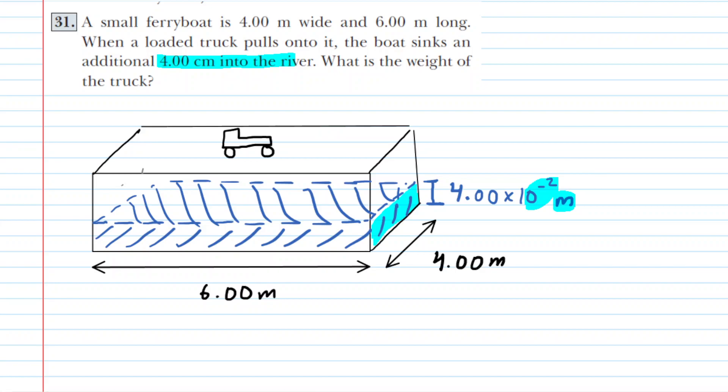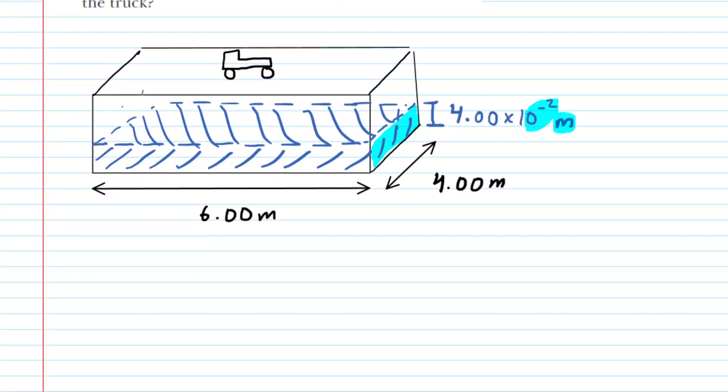Next we're going to draw a free body diagram showing the forces acting on the ferry boat. We'll represent the ferry boat as just a dot. We have the weight of the truck bearing down on the ferry boat, so we'll call that W sub T. And then the ferry boat is being kept afloat by a buoyant force. It's submerged in a fluid, and therefore there is an upward buoyant force acting on it. Those would be the two forces acting on the ferry boat.